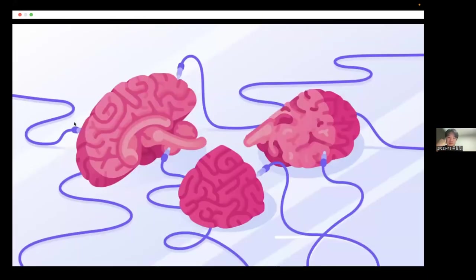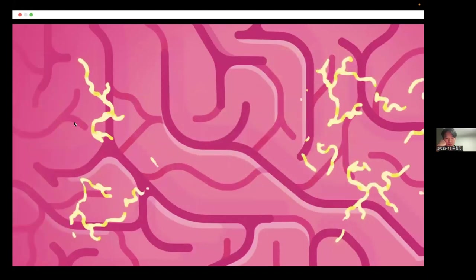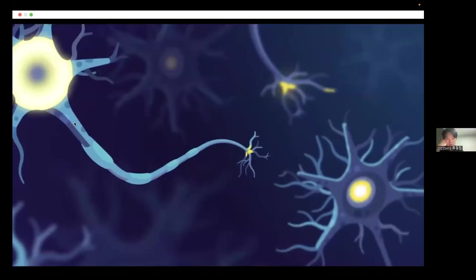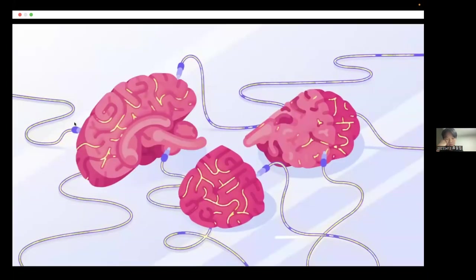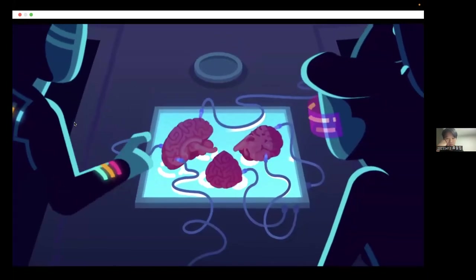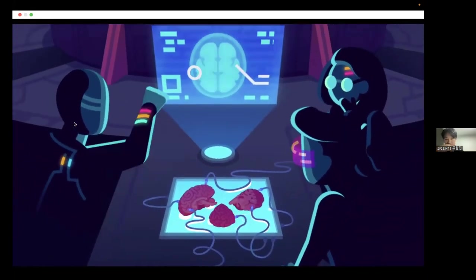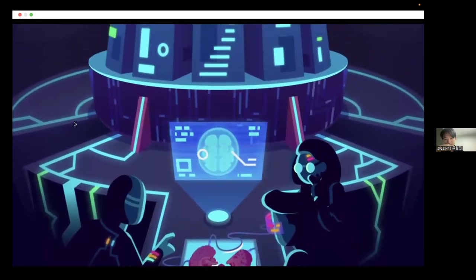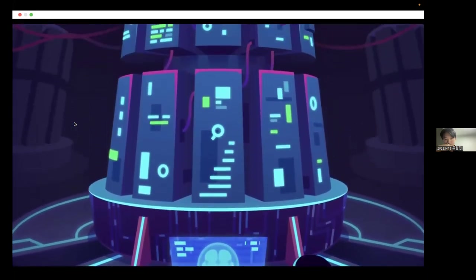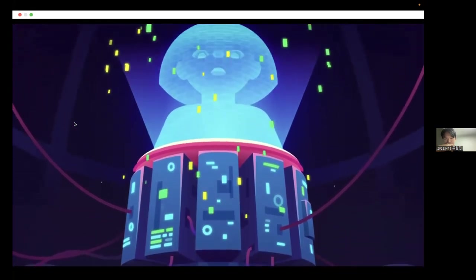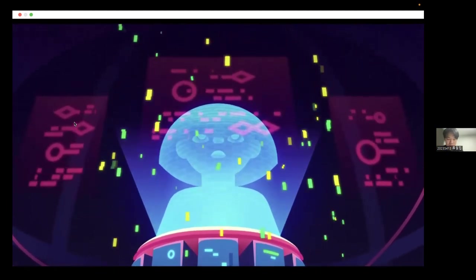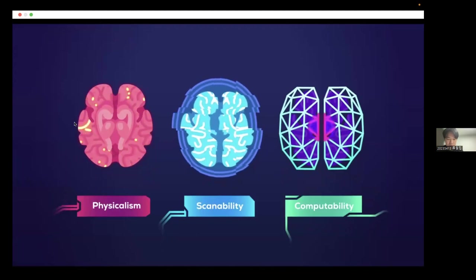Mind uploading is the hypothetical concept of making a copy of this inner world and transferring it into a computer to run a simulation of your consciousness. But even defining the premise gets really hard, really fast. The possibility of mind uploading is based on three assumptions. Assumption one: your mind is in your brain's structure, arrangement, and biochemistry. The idea that everything about the mind can be found in the brain is called physicalism.